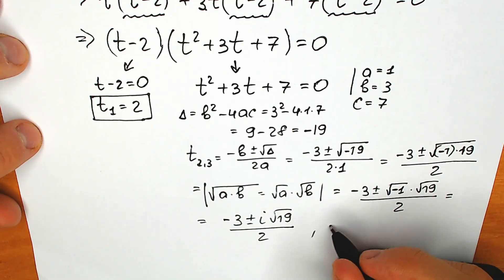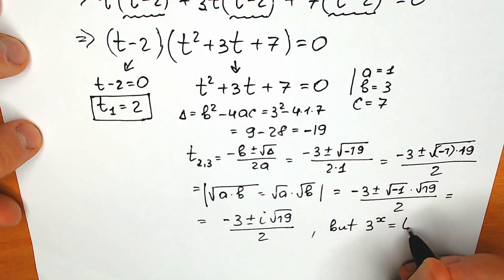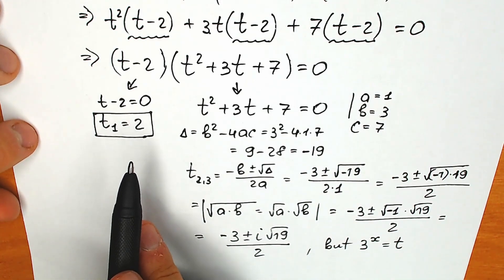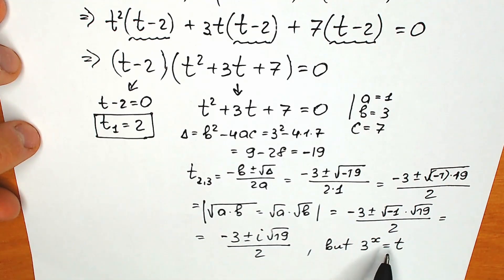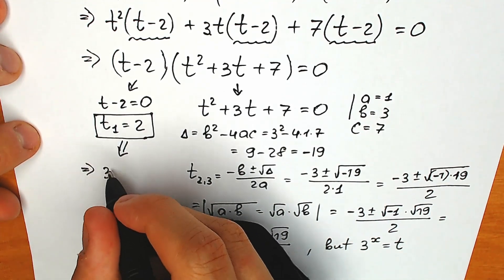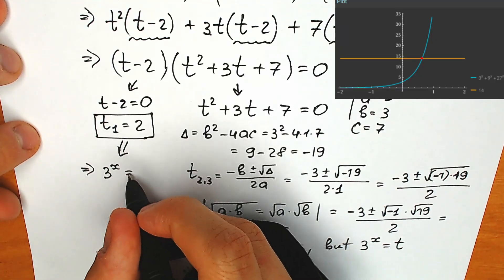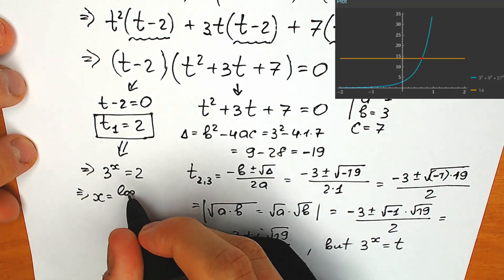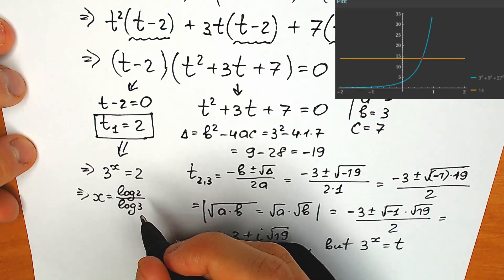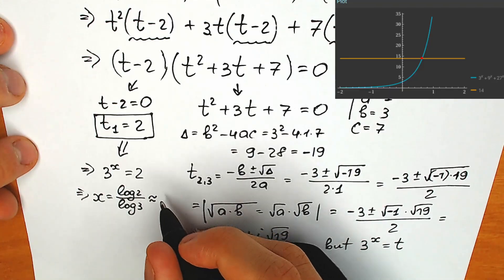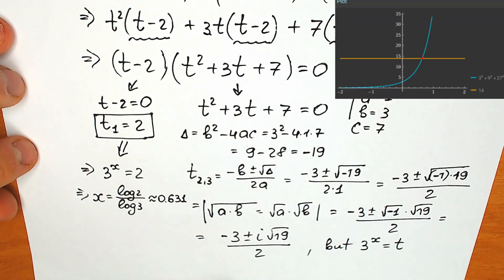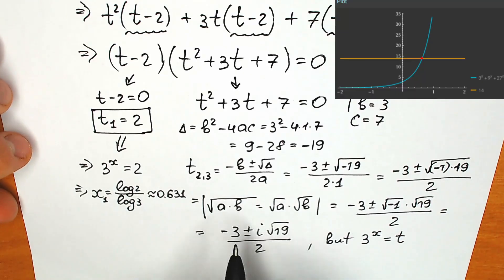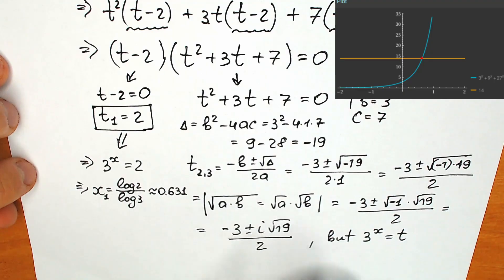Keep in mind that 3 to the x equals t. Starting with t₁ equals 2: 3 to the power x equals 2, so x equals log 2 over log 3. If you're interested in an approximate answer, x is approximately 0.631. This is our x₁, our real number root.